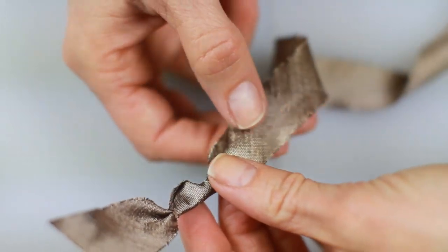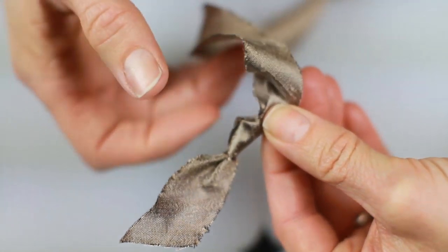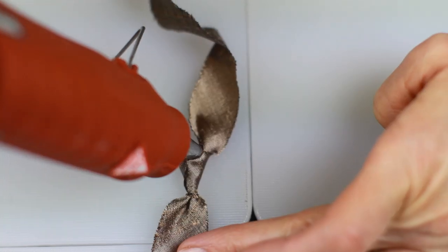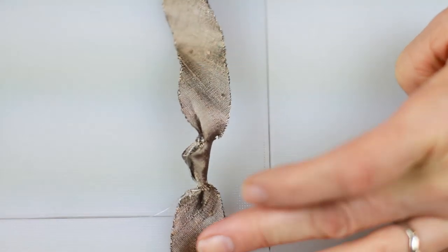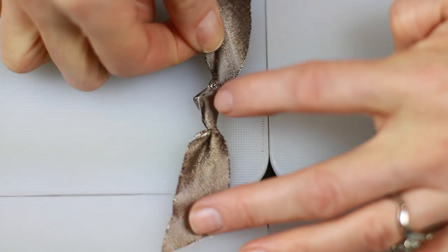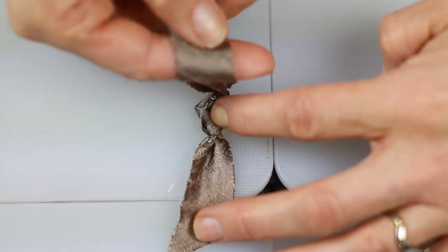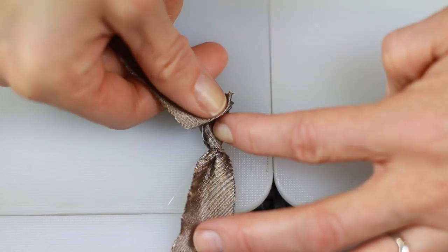You want it to go with the grain of the ribbon so when you fold it over, it should fold over nicely with the way that the ribbon was woven. Put a couple dabs of glue down and you're going to fold over keeping that top side up.